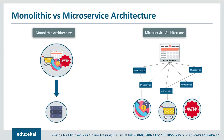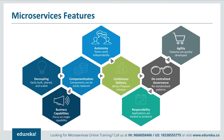Let's summarize the difference between both architectures. In short, monolithic architecture had a single framework for all features on a single database, whereas microservice architecture has different microservices for each and every feature, each handling their own database. Now, let's look at what features made developers shift from monolithic architecture to microservices.